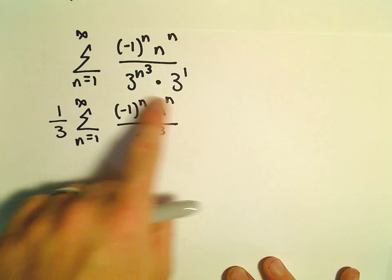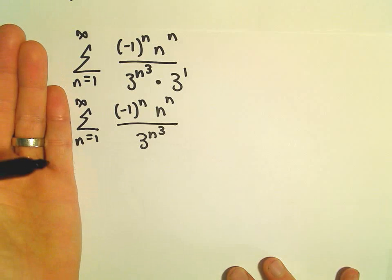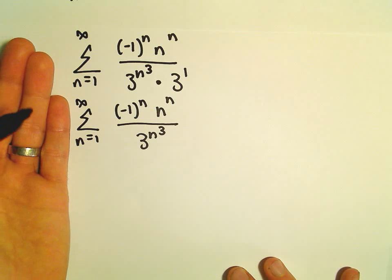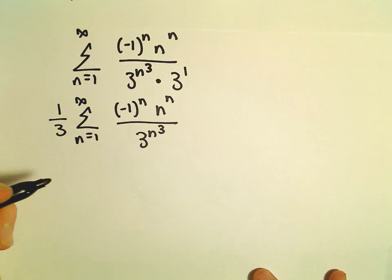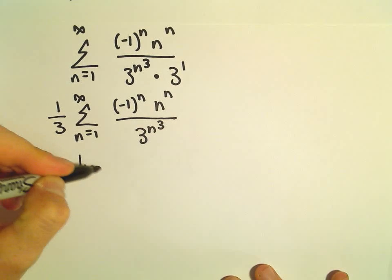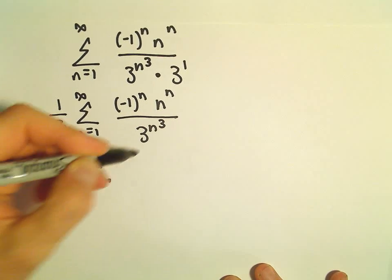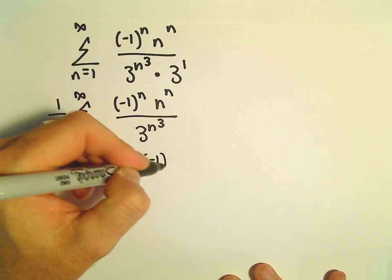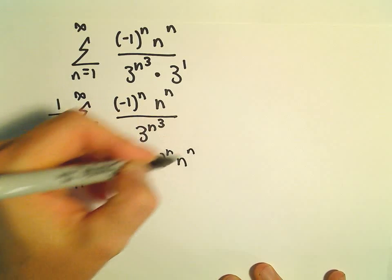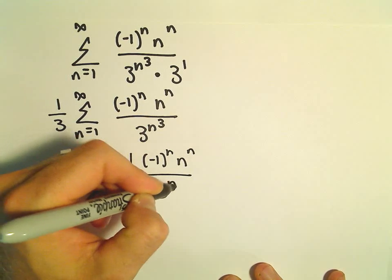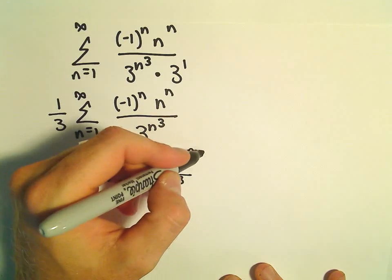So, I'm just going to look at this part now. If this series converges, when you multiply it by 1 third, it converges. If it diverges, when you multiply it by 1 third, it's going to diverge. So we'll take the limit as n goes to infinity. We'll take the absolute value of negative 1 to the n, n raised to the n, and then 3 raised to the n to the third power.